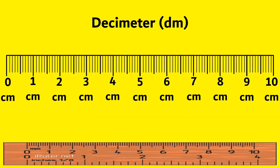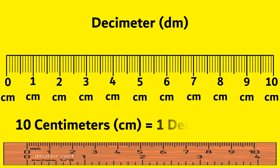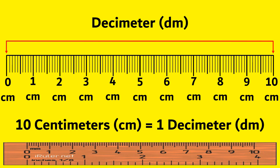Next, decimeter. 10 cm is equal to 1 decimeter. From 0 cm to 10 cm is equal to 1 decimeter.